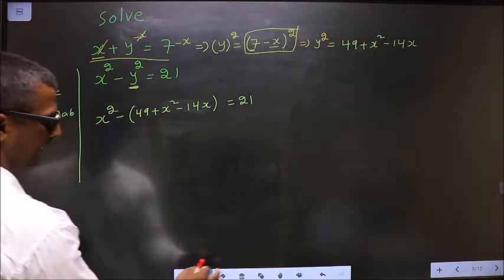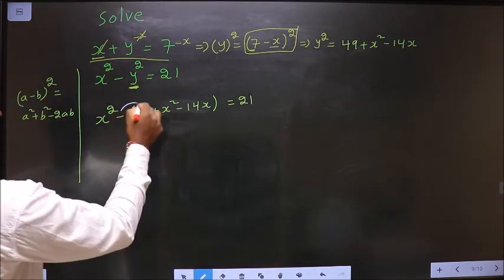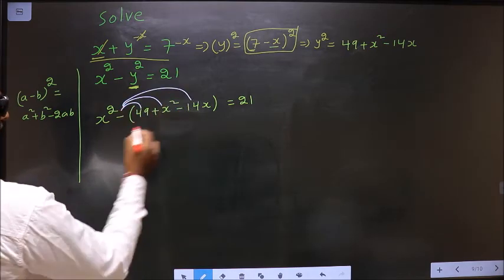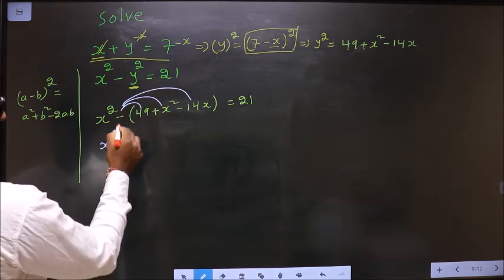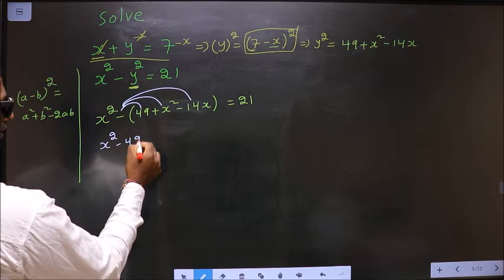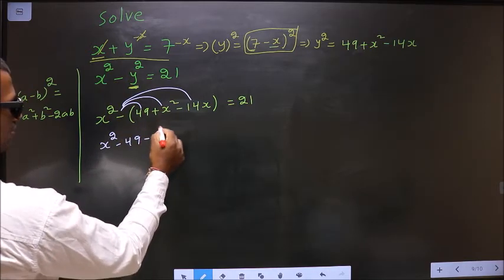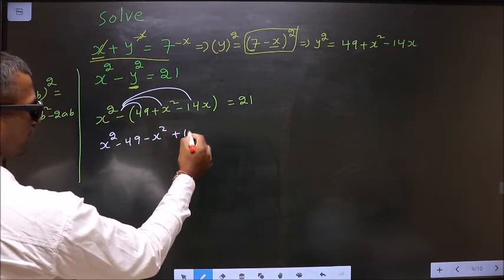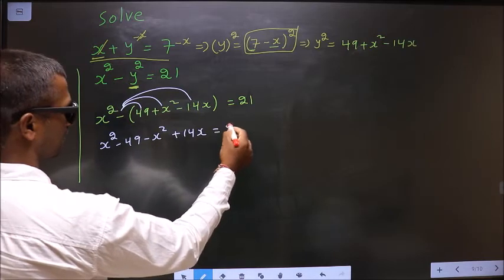Now to simplify, I have to open up the bracket in this way. So what do I get? X square minus 49 minus x square plus 14x equal to 21.